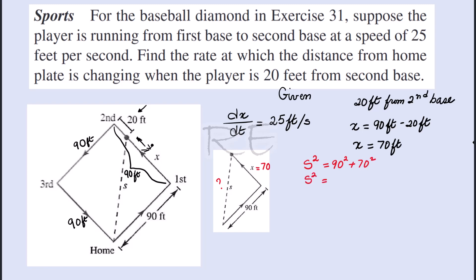to 90² plus 70². s² equals 8,100 plus 4,900, which is 13,000. Now s will be the square root of 13,000, which can be simplified into the square root of 100 times the square root of 130. So s equals 10√130. Now the derivative model will involve